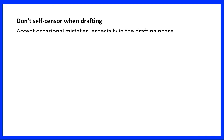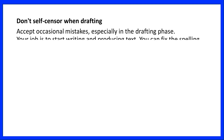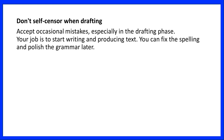I don't want you to self-censor yourself when you start writing your essay. Don't stop in the middle of a paragraph to rewrite all sentences so that they have perfect grammar or zero spelling mistakes. You need to learn to accept occasional mistakes, especially during the drafting phase. Your job as an author is to start writing and to produce text. Later in time, you can fix the spelling and polish the grammar, but not at the beginning of the writing process.